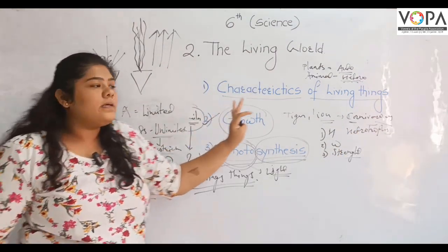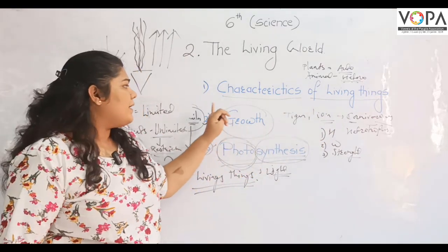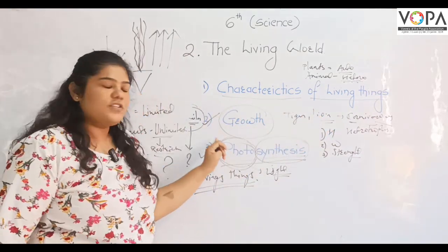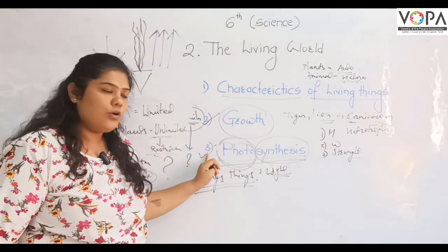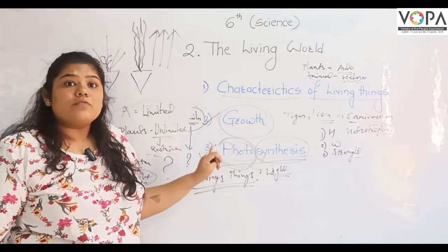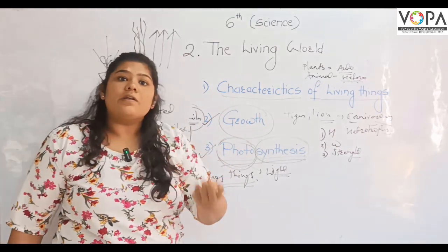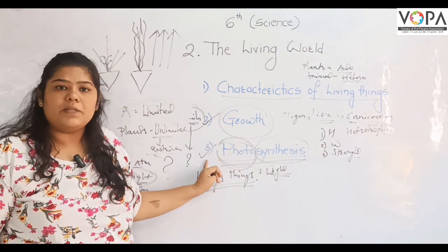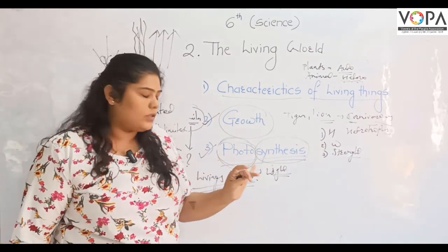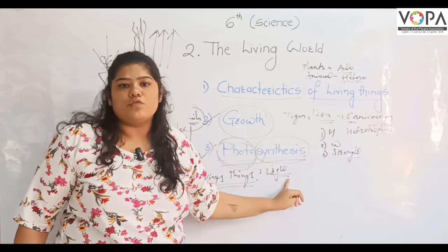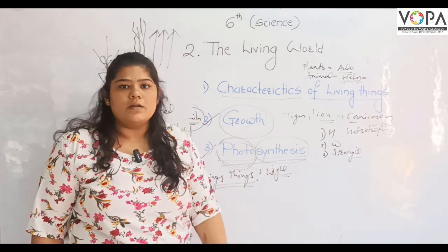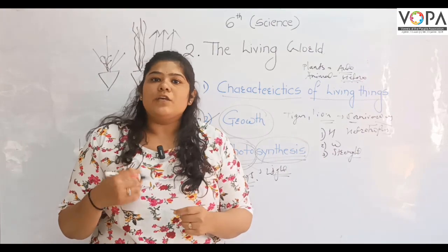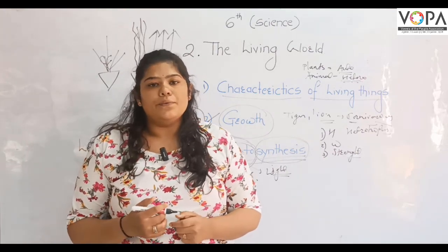So in this part, we learned about living things. Living things have characteristics: one is growth, and plants obtain food through a process called photosynthesis. So this is what we covered in this part. Thank you.